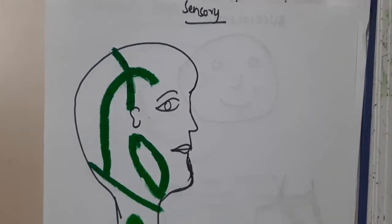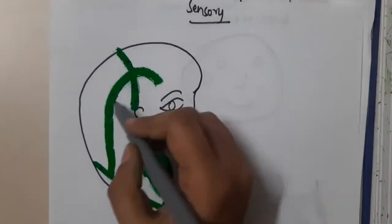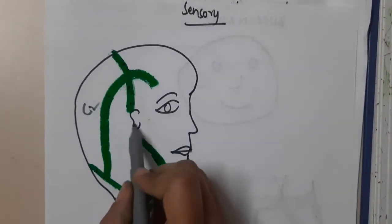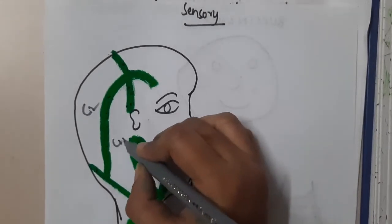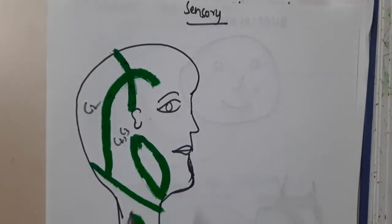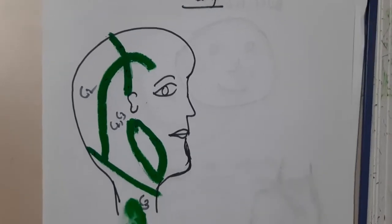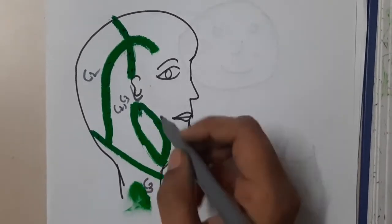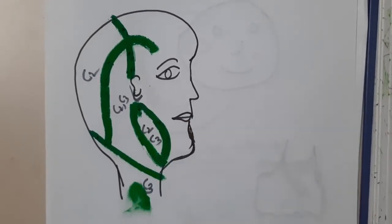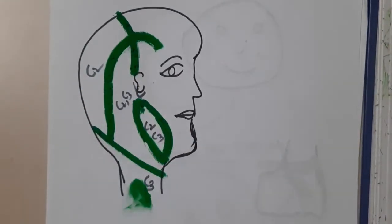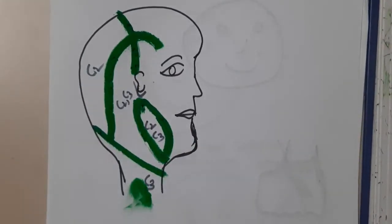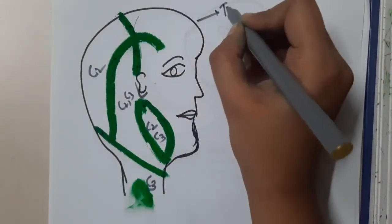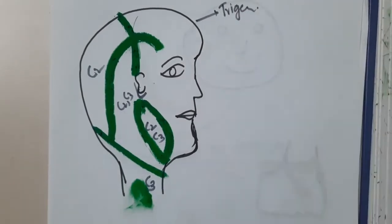The back of the scalp is supplied by C2, then behind the ear it is supplied by C2 and C3. Below the mandible in the neck it is supplied by C3, and just beneath the ear it is supplied by C2 and C3.